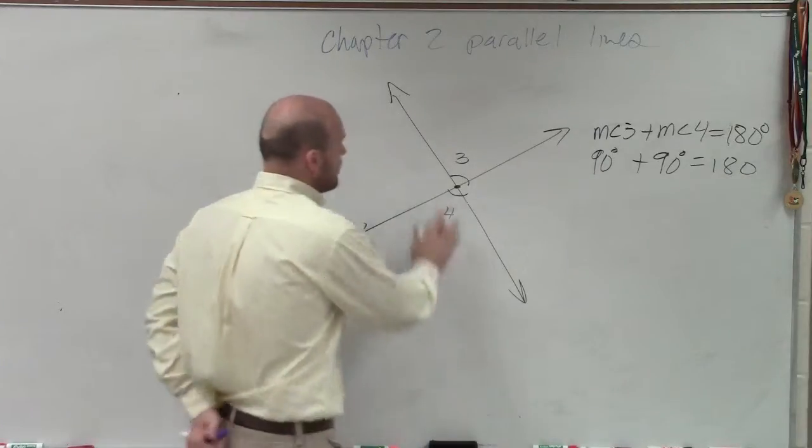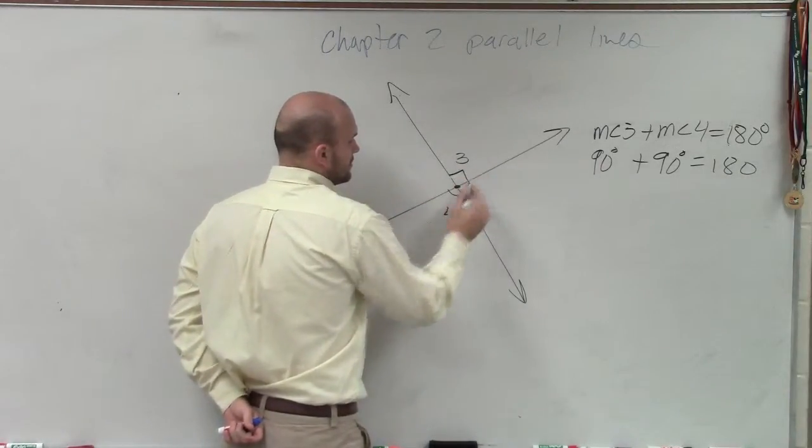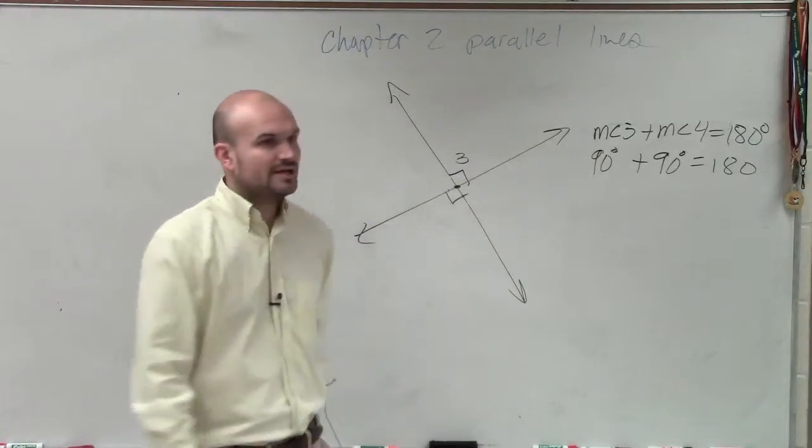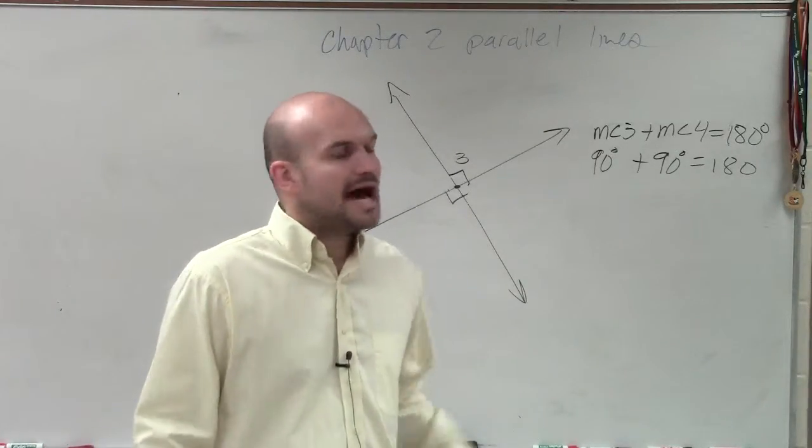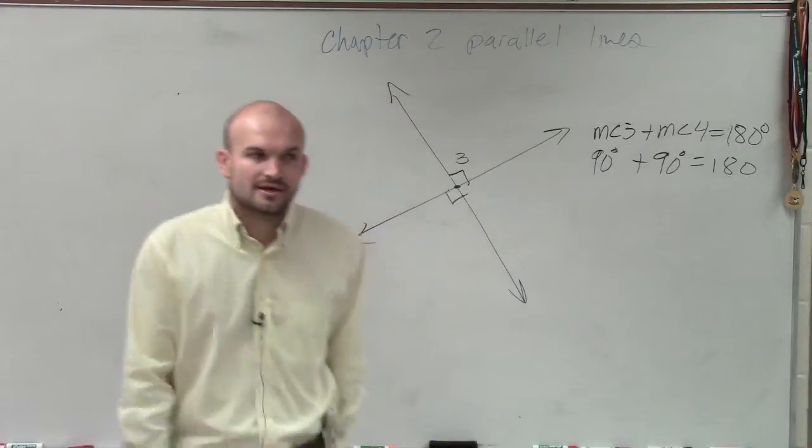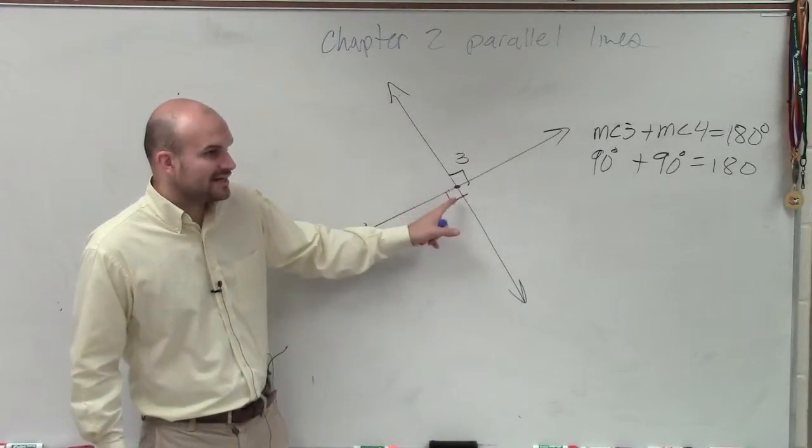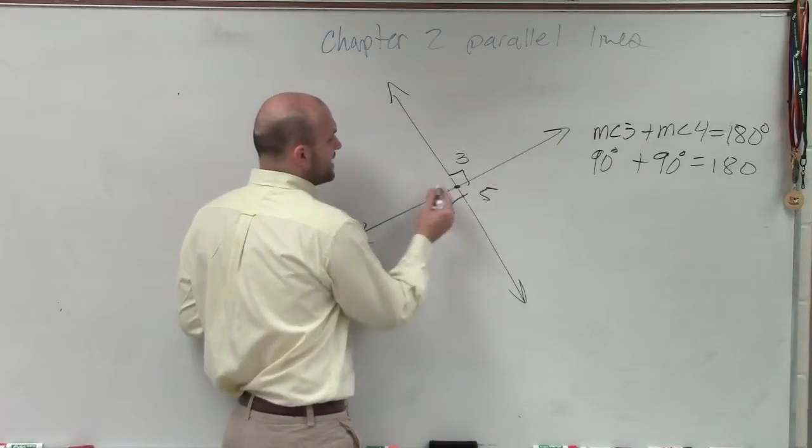So guess what? If they're 90, we can use what to represent their angle? Boxes, right? We could create nice little boxes. Now, the next thing I just want to show you guys, if this is 90 degrees, so if this is angle four, this is angle five, and we'll call this angle six.